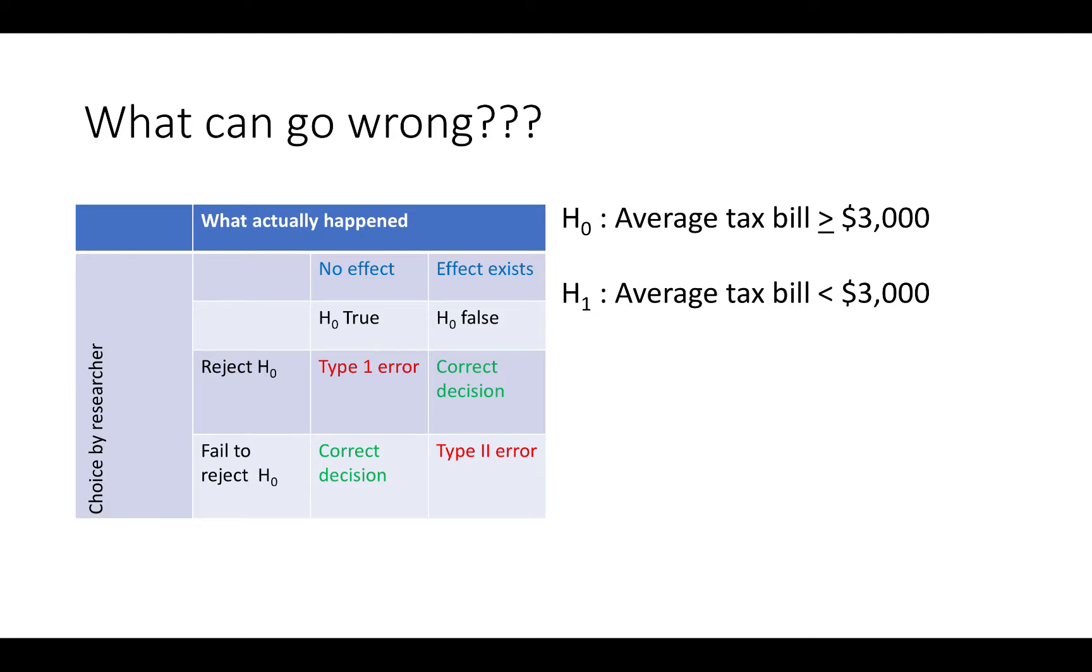When we work with a sample of data, there's always a chance that that sample is not reflective of the population and that we make the wrong choice. Let's take a look at what can possibly go wrong.